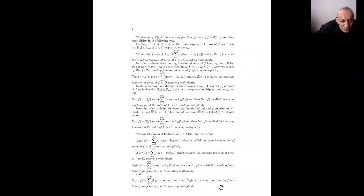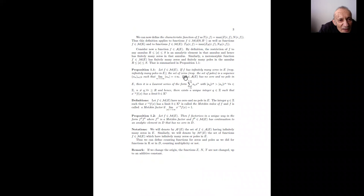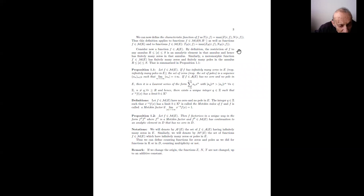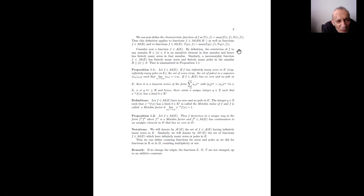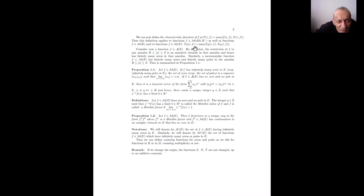We can now define the characteristic function of f in these various cases. In general, we put T(r, f) = max(Z(r, f), N(r, f)). This formula applies for functions in the full field k or in the disk D. For functions out of the hole, we put T_{R,r}(f) = max(Z_{R,r}, N_{R,r}).